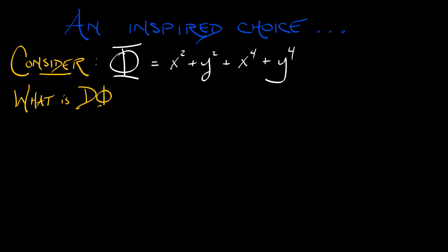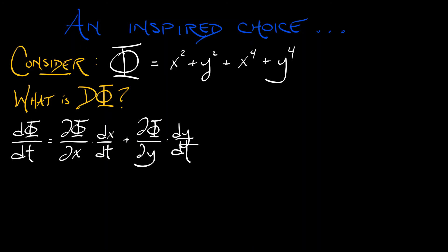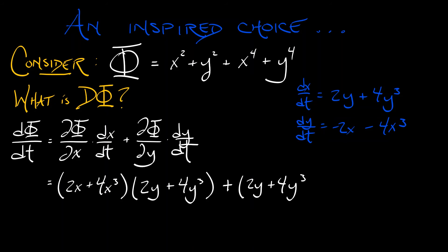Let's consider what the derivative of φ with respect to t looks like. I can use the chain rule, and I can say that dφ/dt is ∂φ/∂x times dx/dt plus ∂φ/∂y times dy/dt. Remembering what dx/dt and dy/dt are, plugging that in, the partial in x is 2x plus 4x cubed, and then dx/dt is 2y plus 4y cubed, and then the partial with respect to y is 2y plus 4y cubed, and then dy/dt is minus 2x minus 4x cubed. This perfectly balances. This vanishes. This gives us dφ/dt equals zero.